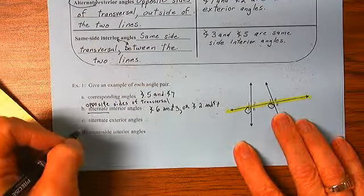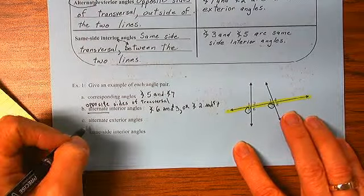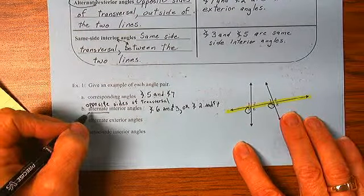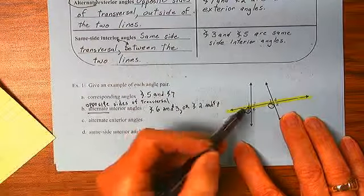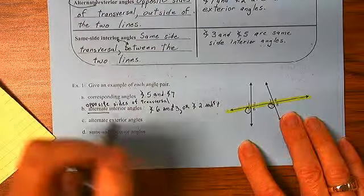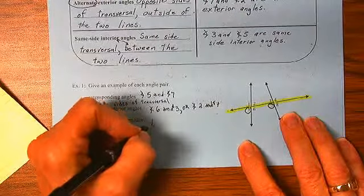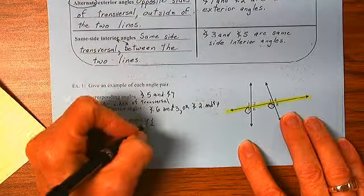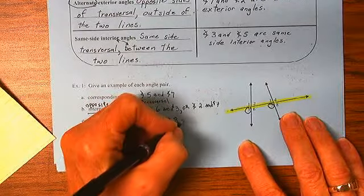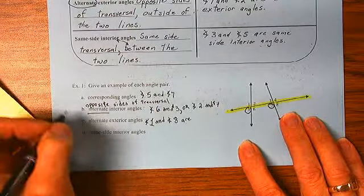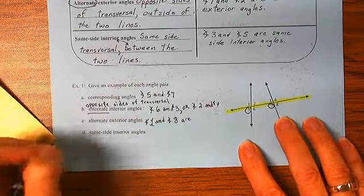Alternate exterior angles. Alternate, again, means on opposite sides of the transversal, exterior, outside of the two lines. So angle 1 and angle 8 are alternate exterior angles.